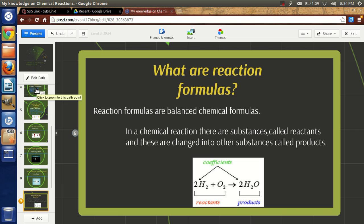What are reaction formulas? Reaction formulas are balanced chemical formulas. In a chemical reaction, there are substances called reactants and these are changed into other substances called products. Here you can see the example.